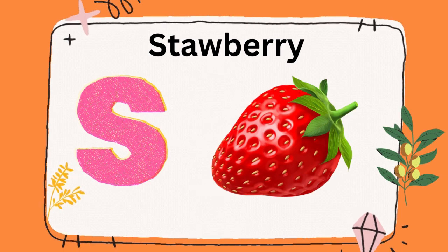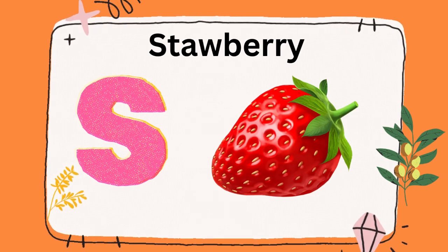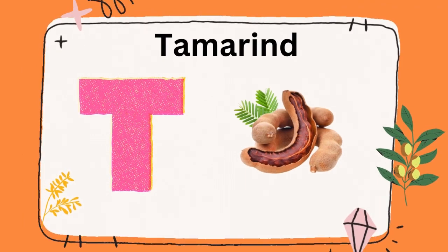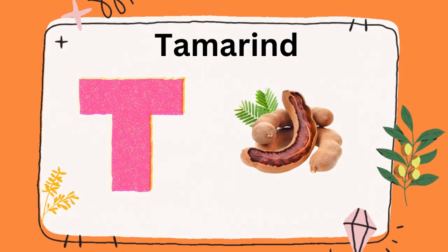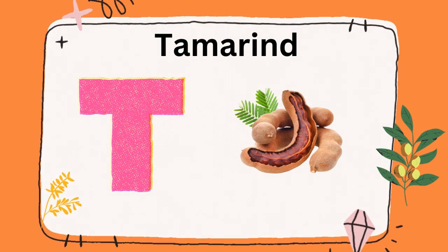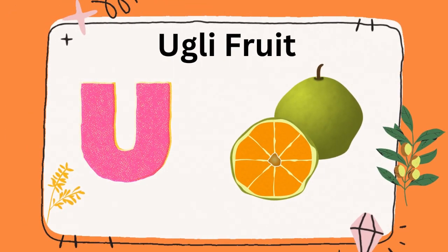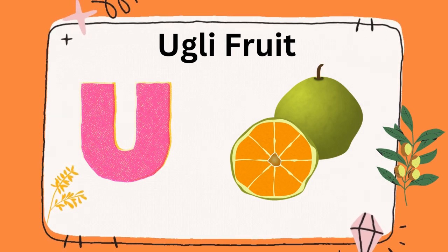S is for strawberry, S is for strawberry, strawberry. T is for tamarind, tamarind. U is for ugly fruit, ugly fruit.